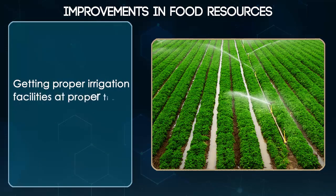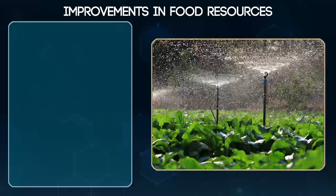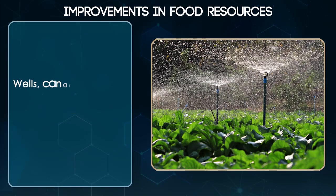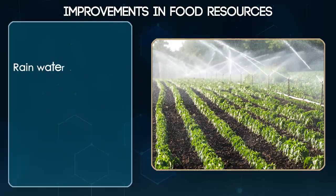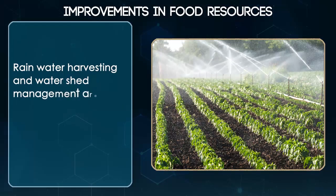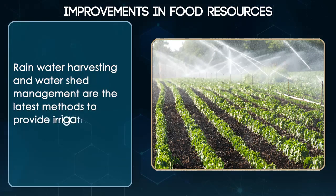Getting proper irrigation facilities at the proper time increases the crop yield. Wells, canals, rivers and tanks are a few irrigation facilities available. Rainwater harvesting and watershed management are the latest methods to provide irrigation facilities.